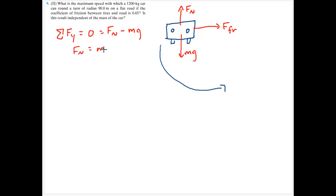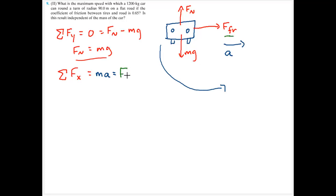Normal force is equal to mass times gravity. In the x direction, the car is accelerating, and that's going to be equal to the car's mass multiplied by its acceleration. The only force is friction, so mass times acceleration equals the force of friction. The acceleration is the centripetal acceleration, so mass times velocity squared divided by the radius must equal the force of friction.